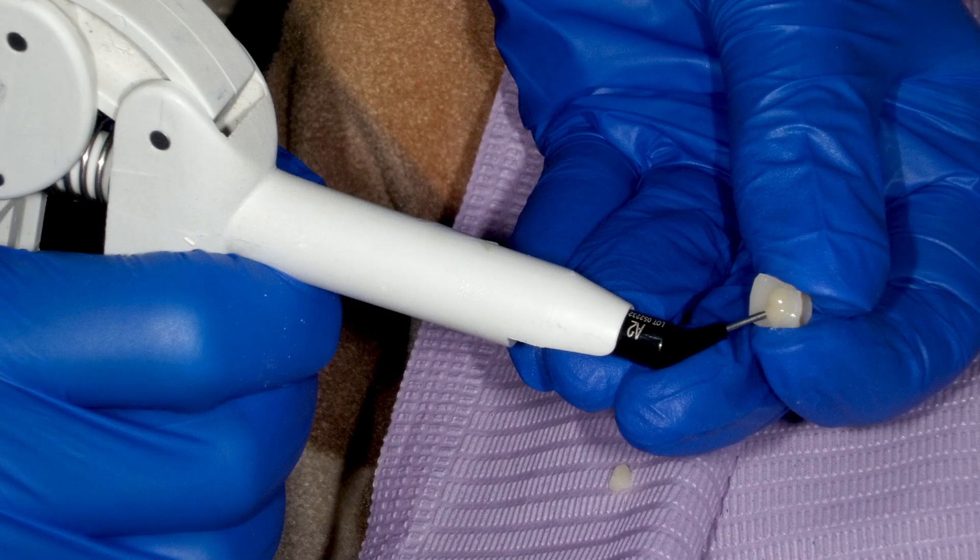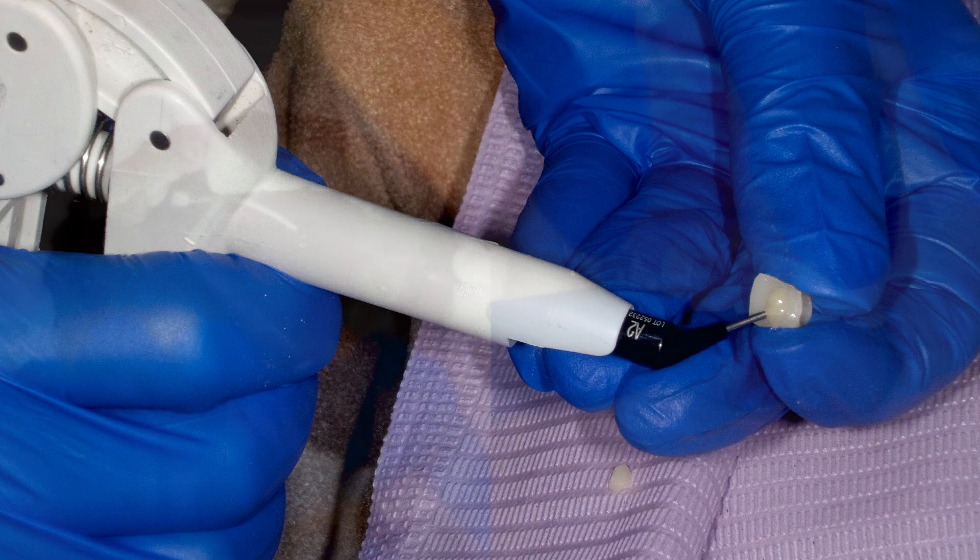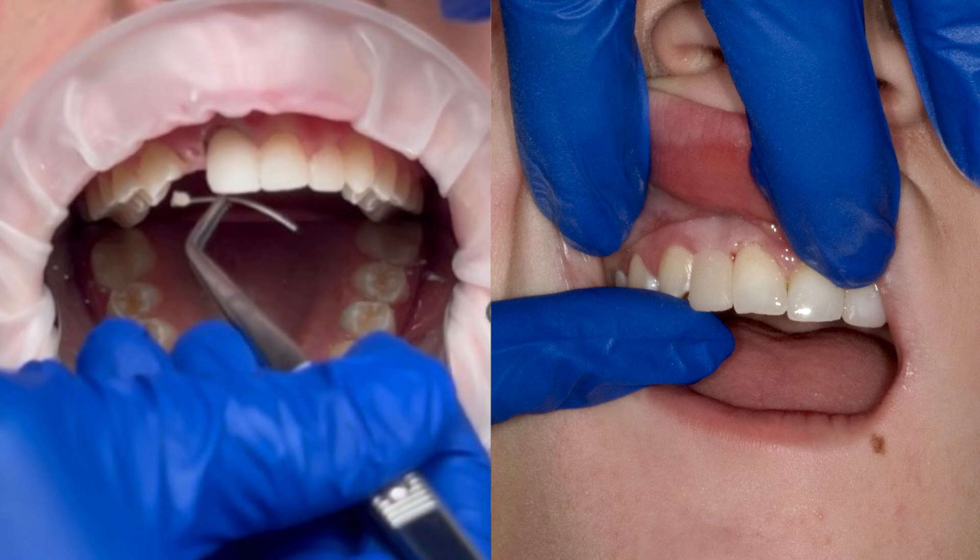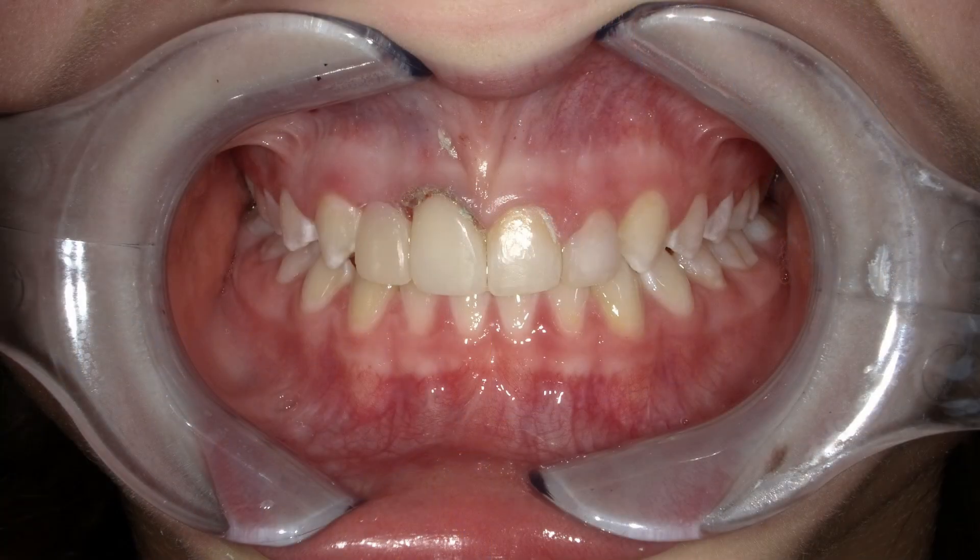Once we have the pontic fabricated, the next step will be to adhere it into position. Now in this particular case, we're going to treat the lingual surfaces of the adjacent teeth. We're going to use an orthodontic wire and resin cement to bond the wire into position and then allow us to seat the pontic over top of the wire and also adhere it into position.